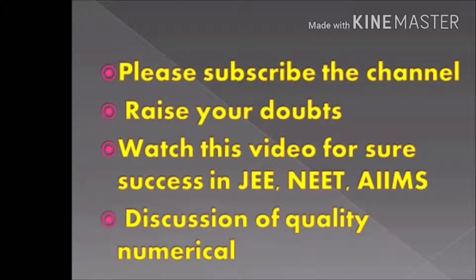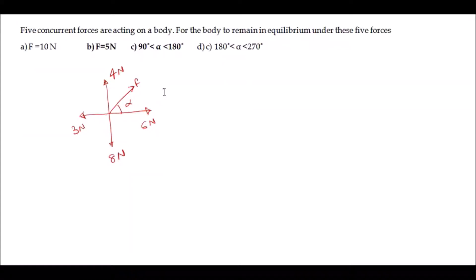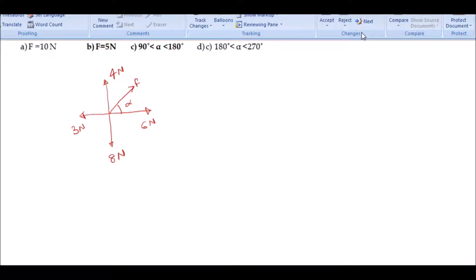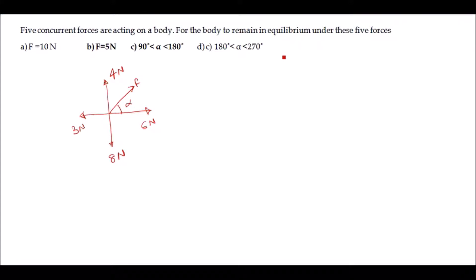The next problem: five concurrent forces are acting on a body. For the body to remain in equilibrium under these five forces, you have to calculate the value of F and angle alpha. As the body remains in equilibrium, it means that all forces acting on the body add up to zero — summation F is equal to zero.